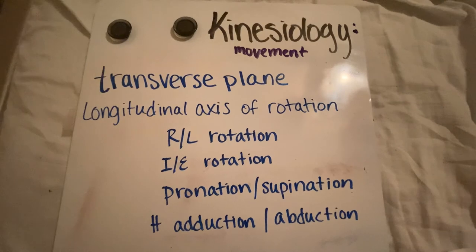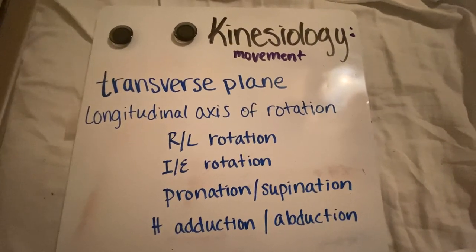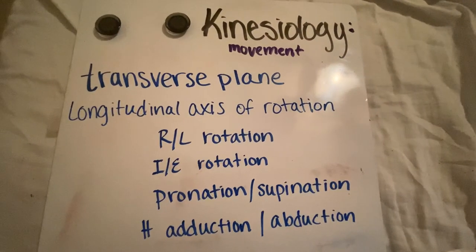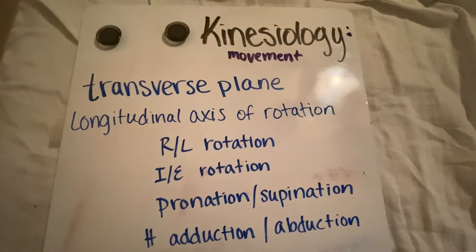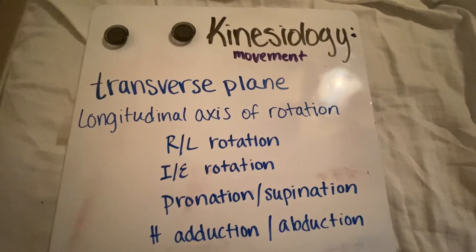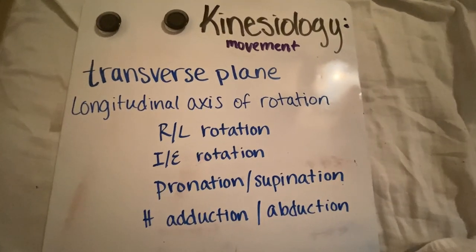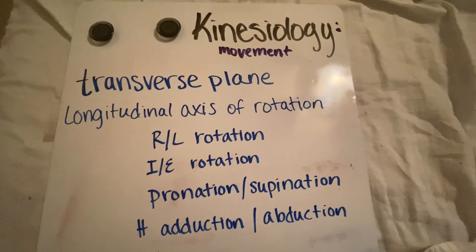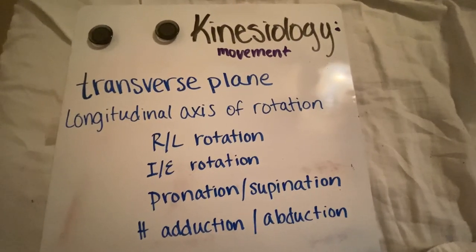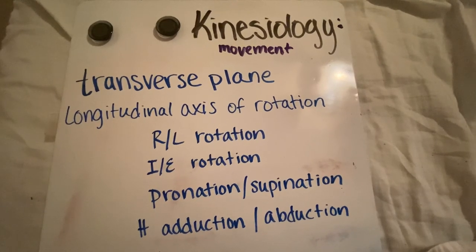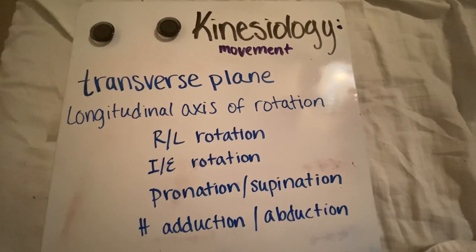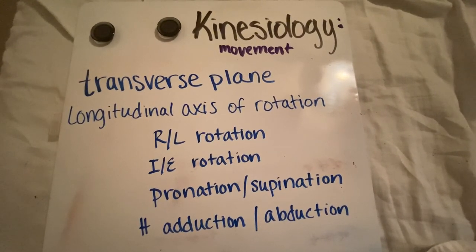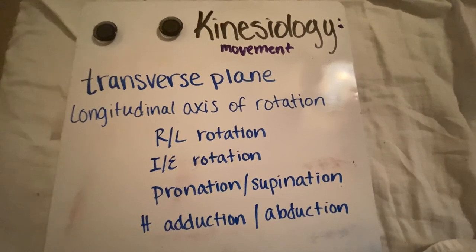Pronation and supination happen at the radioulnar joint and in the ankles. Supination at the radioulnar joint is like holding a bowl of soup in your hand; pronation is when you turn that bowl of soup over. Pronation and supination at the ankle are more complex combinations of movements: supination at the ankle is a combination of inversion, adduction, and plantarflexion, while pronation at the ankle is a combination of eversion, abduction, and dorsiflexion.